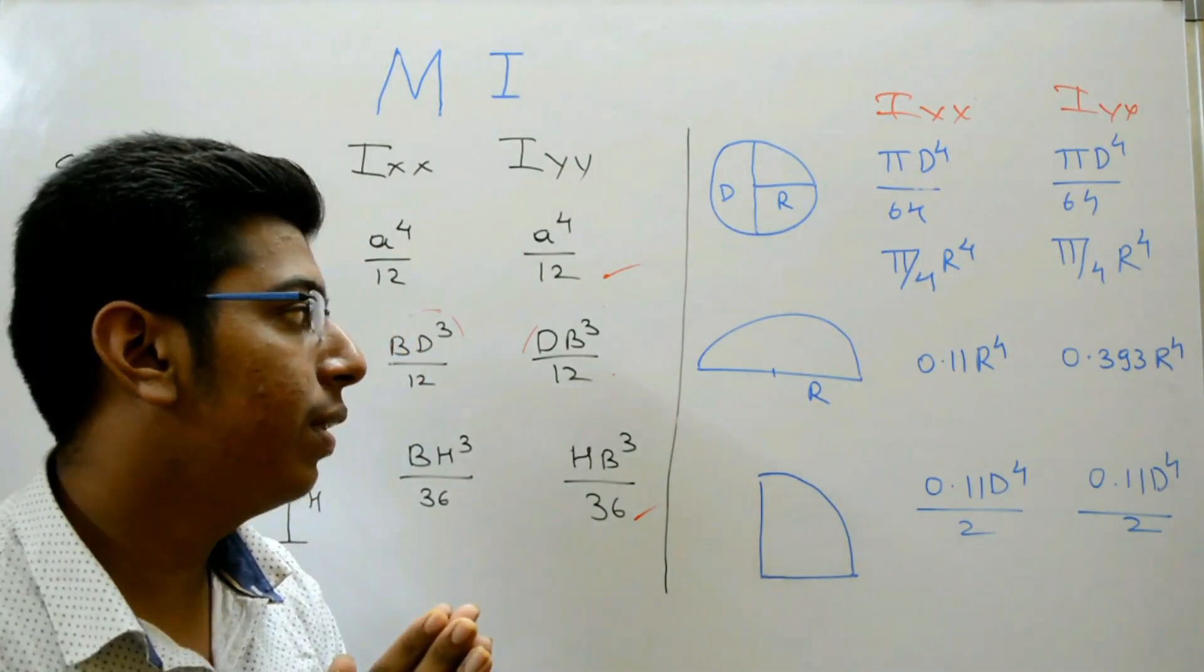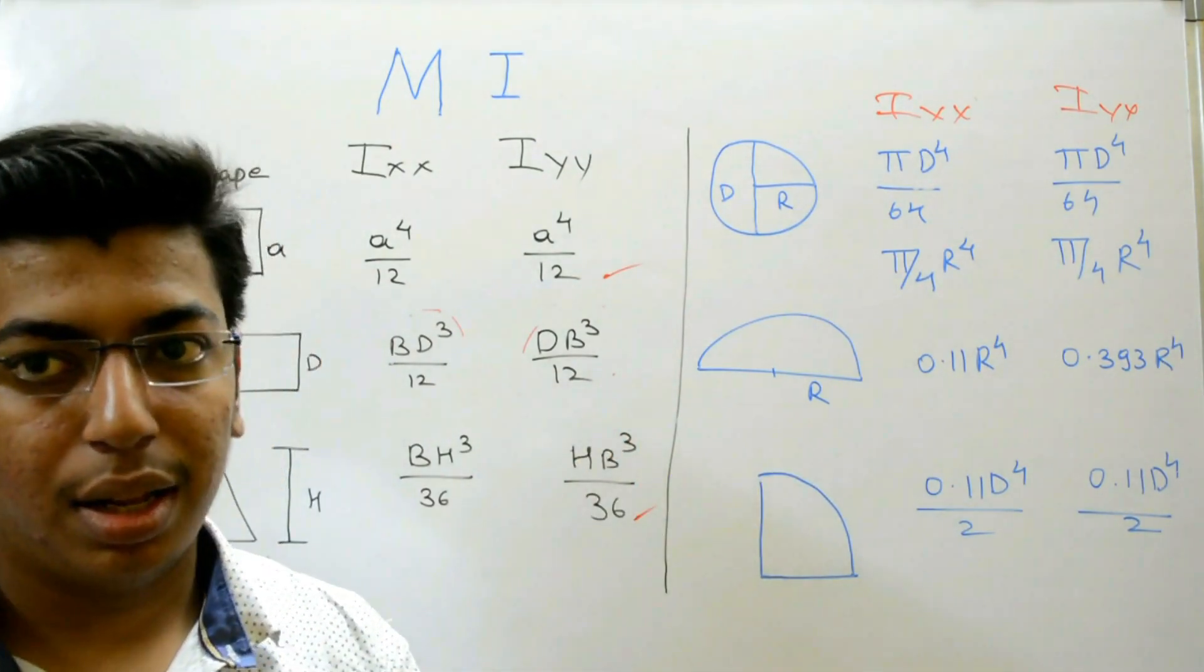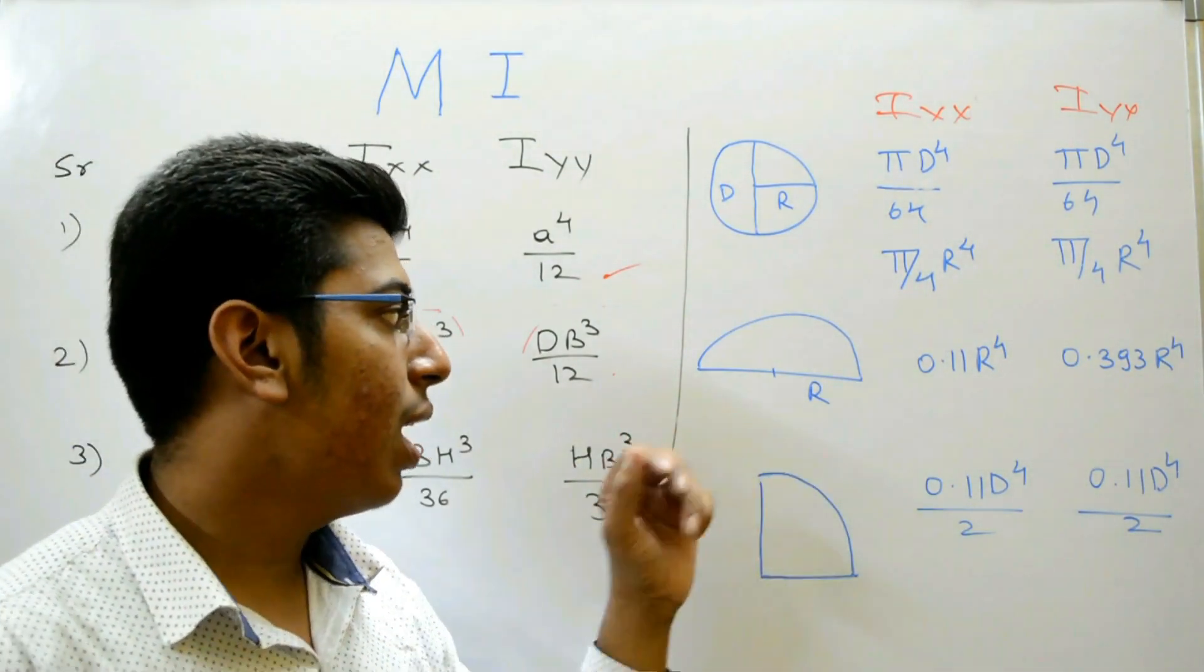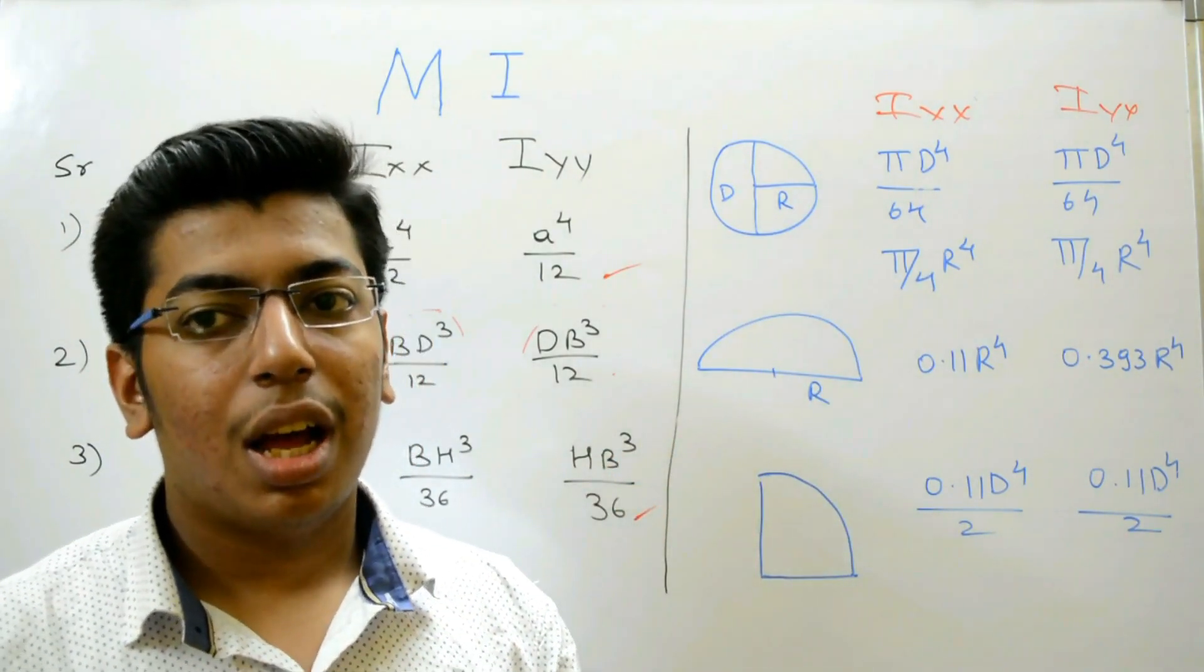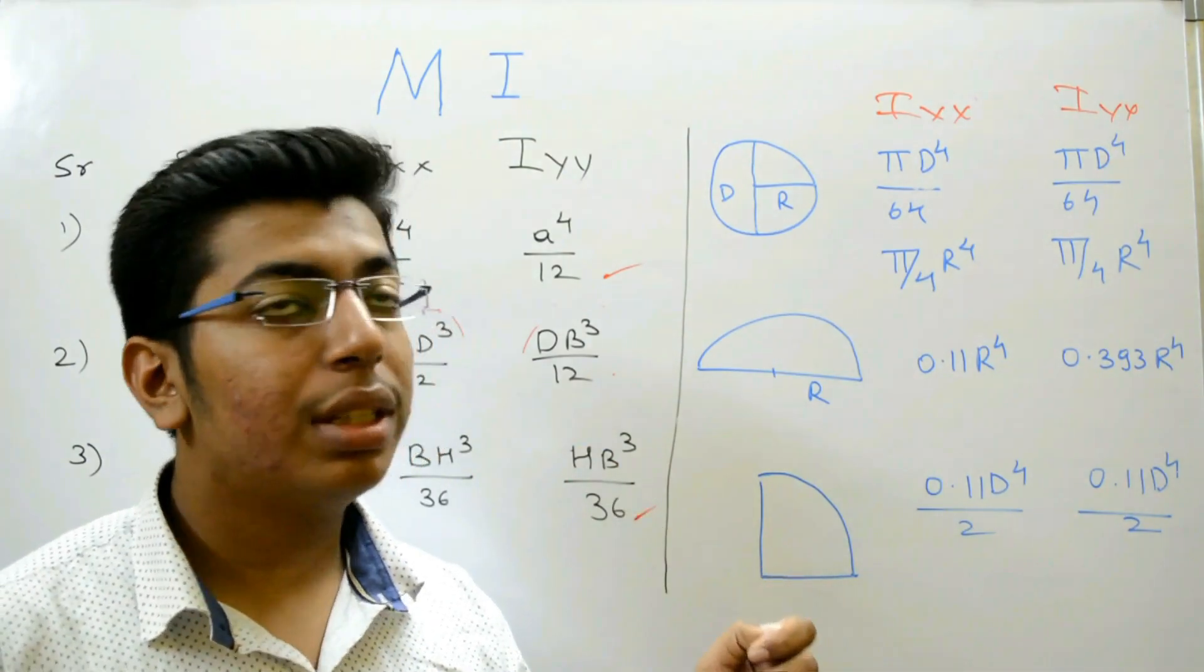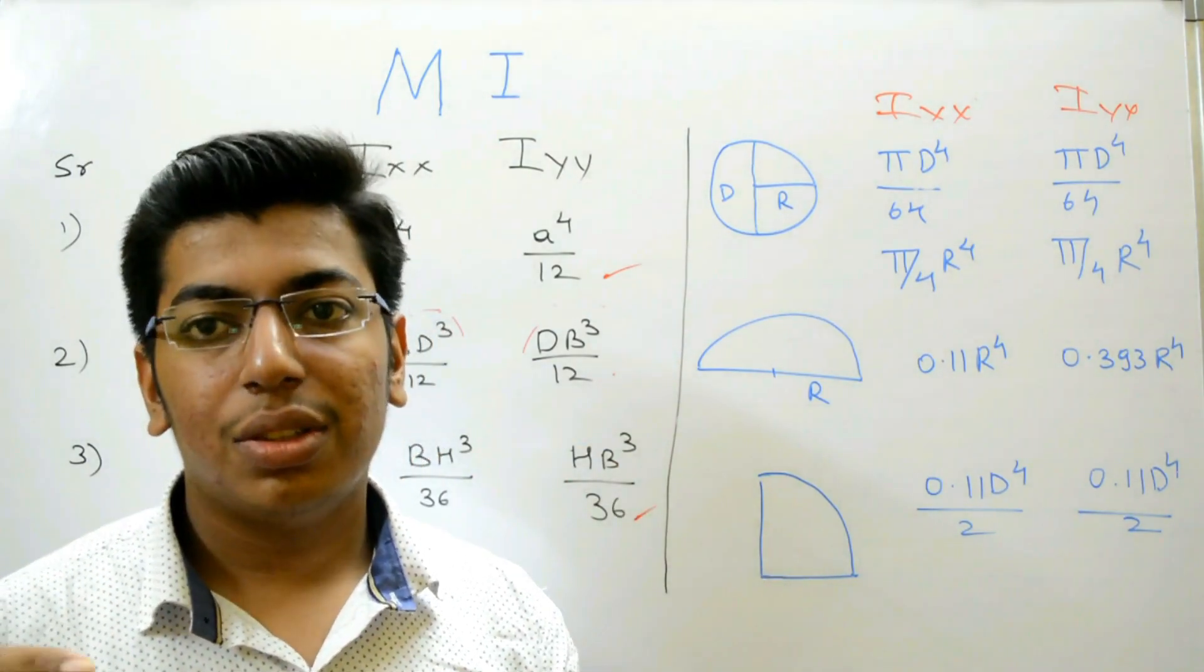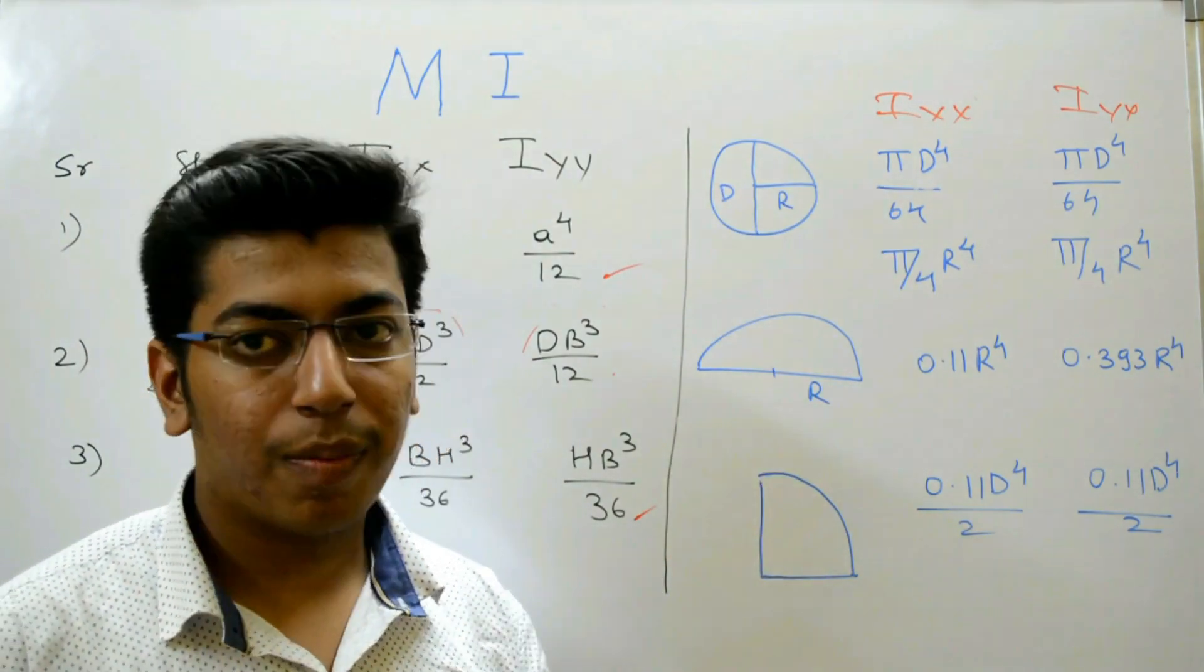Moving further, the next shape is semicircle, having radius R. The moment of inertia along x-axis is 0.11 R raised to 4 and the moment of inertia along y-axis is equal to 0.393 R raised to 4.